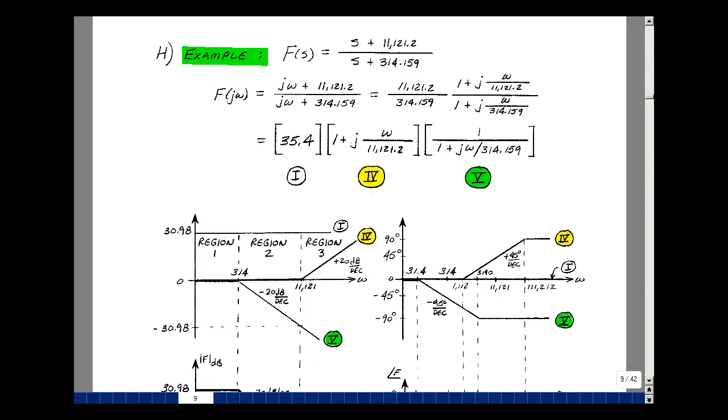This lesson deals with an example of using Bode platforms. You can find these notes in the ECE 202 ebook in chapter 12, starting at page 9. Suppose you have a transfer function f(s) that's equal to (s + 11121.2) divided by (s + 314.159). This is actually part of the transfer function for the NAB equalizer. This is the pull-in zero that does the equalization.